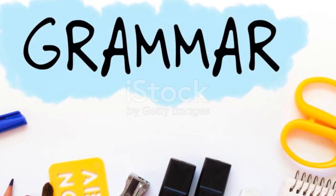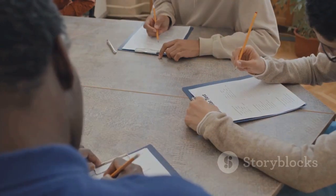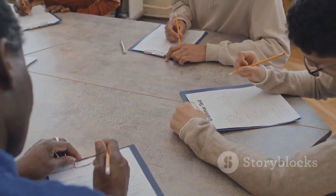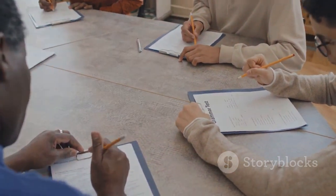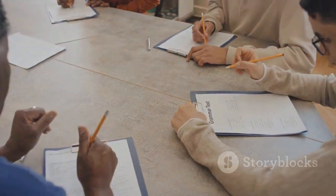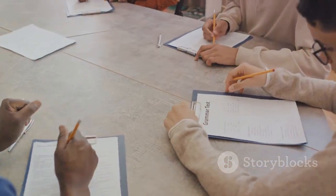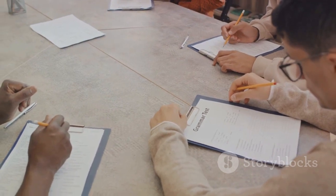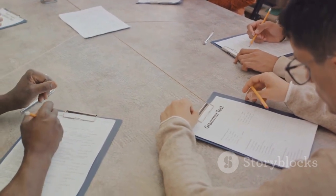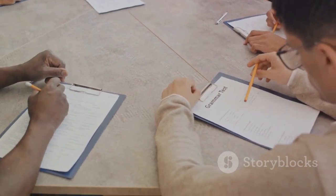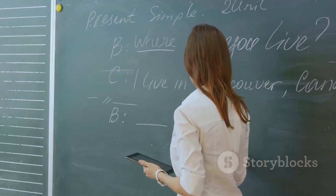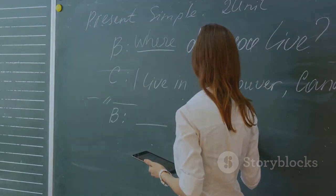Helping verbs are used alongside main verbs to convey shades of meaning, such as possibility or necessity. Understanding these different types of verbs will help you construct clear and meaningful sentences. Let's explore some examples to solidify your understanding.